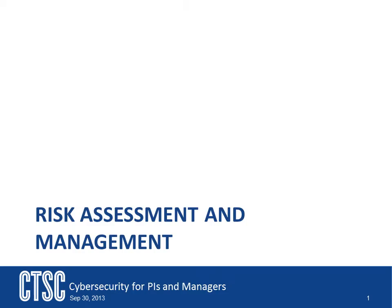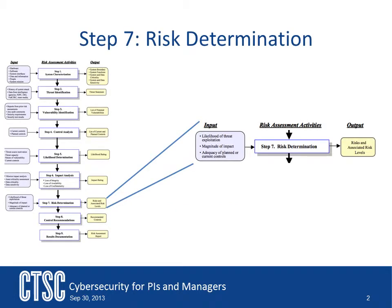This video will continue the discussion about risk management and risk assessment. In this video, we will discuss the seventh step of the NIST outline nine-step process for performing a risk assessment, specifically the risk determination — taking all of the information from the previous six steps of the risk assessment and determining what is the real risk involved to the system.